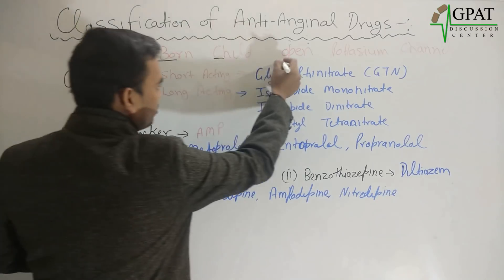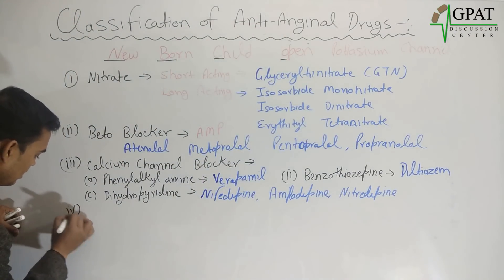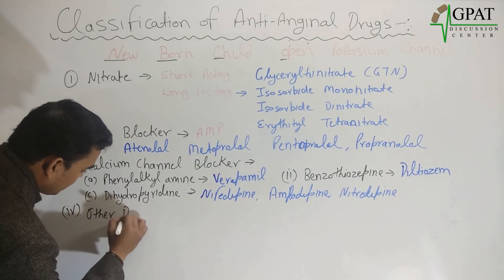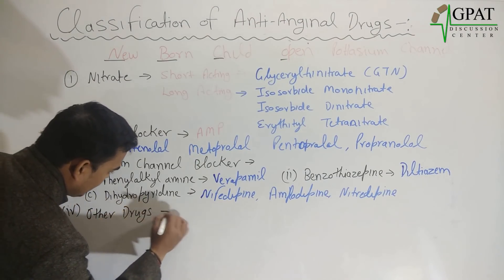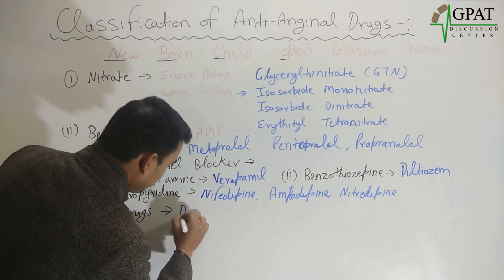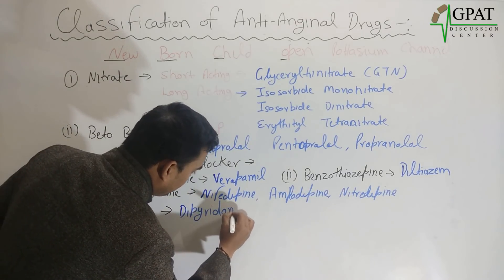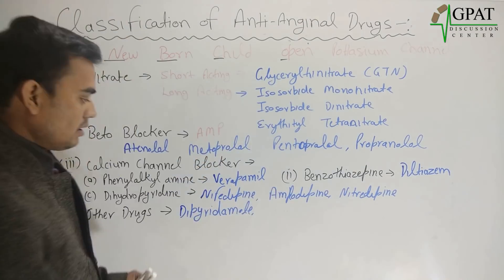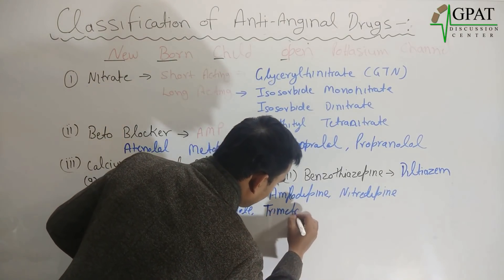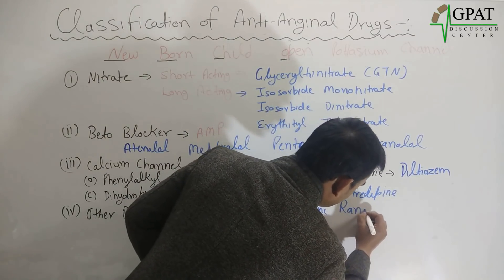The fourth class, from 'O' for open, represents other drugs. The other anti-anginal drugs are dipyridamole, trimetazidine, and ranolazine.